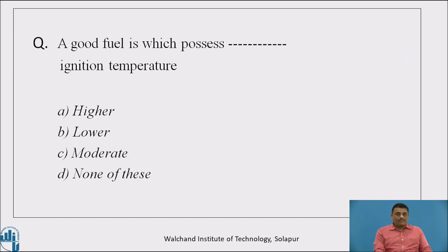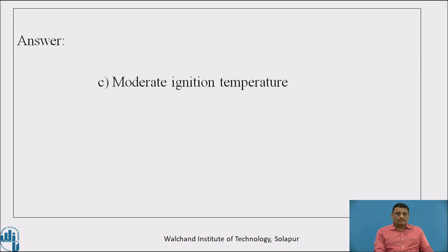Here is a question: a good fuel is a fuel which possesses blank ignition temperature. Option A: higher. Option B: lower. Option C: moderate. Option D: none of these. The correct answer is option C — moderate ignition temperature. Because if the ignition temperature is higher, it is difficult to maintain and create, and if the ignition temperature is low, the possibility of catching fire is more. Therefore, a good fuel is a fuel which possesses moderate ignition temperature.